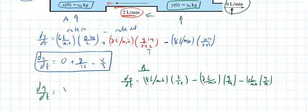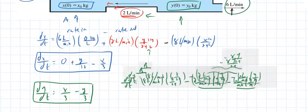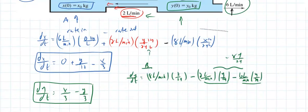That gives negative 8y divided by 24, which makes it minus y divided by 3. So dy/dt equals x divided by 3 minus y divided by 3. Now I'm looking at a system of equations, and systems of equations we know how to do.